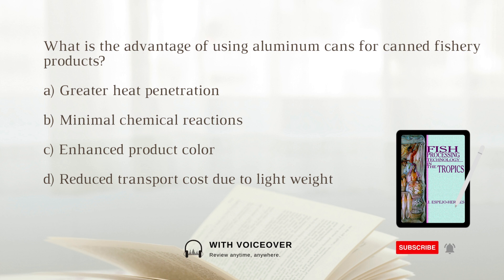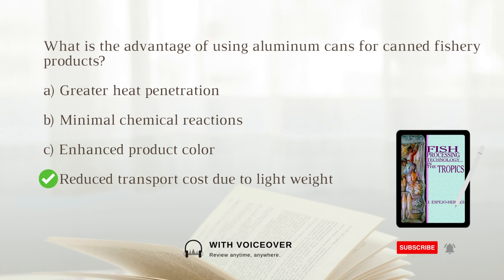What is the advantage of using aluminum cans for canned fishery products? A. Greater heat penetration. B. Minimal chemical reactions. C. Enhanced product color. D. Reduced transport costs due to lightweight. Answer: D. Reduced transport costs due to lightweight. Aluminum cans offer advantages such as lightweight, attractive appearance, corrosion resistance, and lower transport costs.